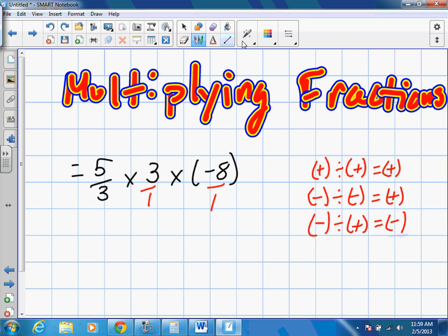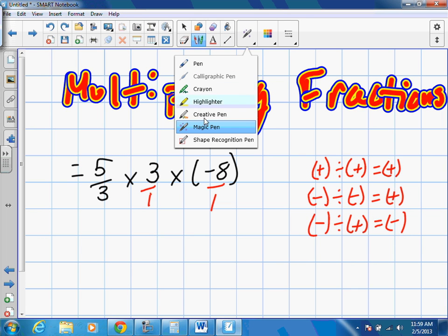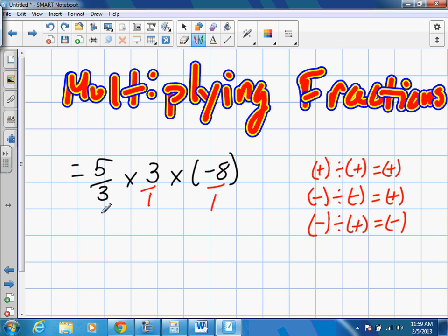So according to BEDMAS also, this is all multiplication. We're going to start from left to right. Now, there's technically a rule in multiplication where we can start wherever we like. But to make things simpler for ourselves, we're just going to always go the way that we normally read, from left to right. And we'll deal with them in pairings. So we're going to deal with the first pair, 5 over 3 times 3 over 1.